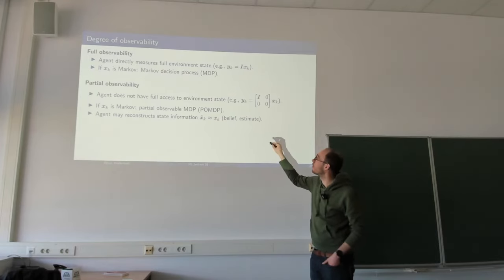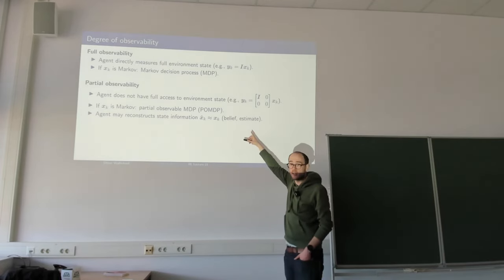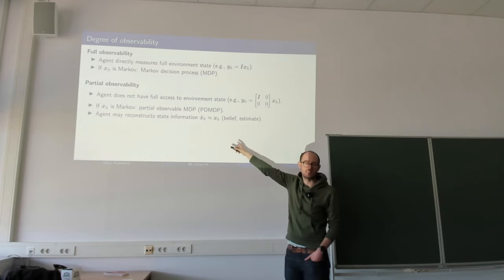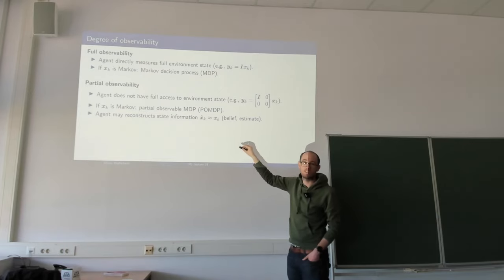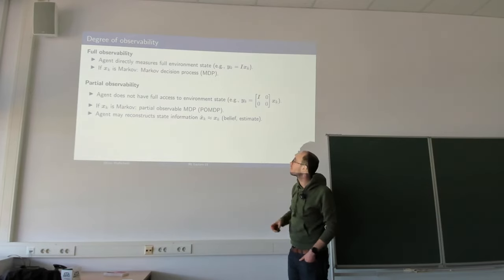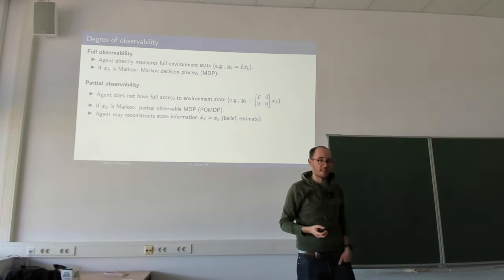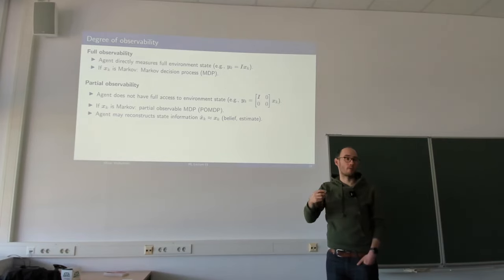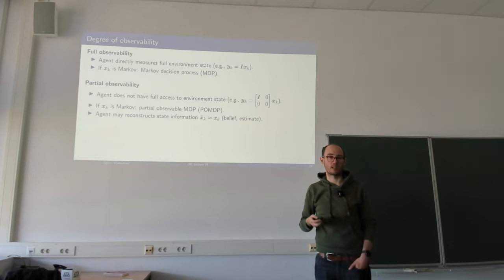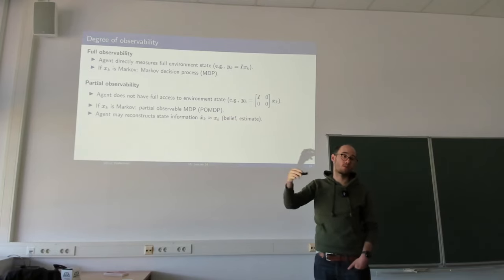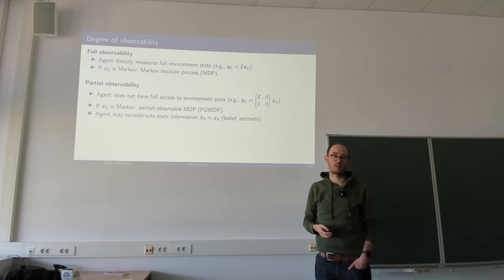In class we will only consider the simple MDP case. We will have a short outlook at the very last lecture for POMDP problems. Solving MDP is straightforward; solving POMDP needs additional work — for example, an explicit estimator or observer. Later on, artificial neural networks as function approximators can also have recurrency, and recurrent networks like long short-term memories can build something like an implicit observer. But we will come to this later.